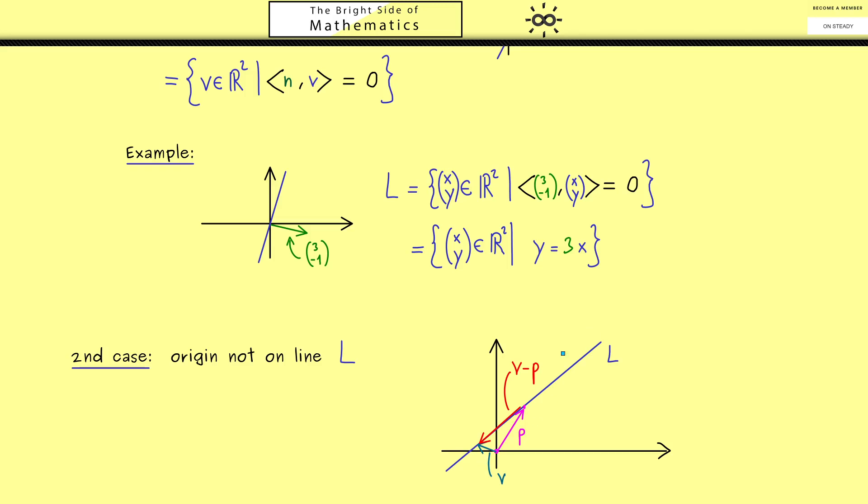And therefore we can do the same thing as before and use a normal vector. Then this vector v minus p is always orthogonal to the normal vector n. Then let's write this down: L is the set of all vectors v in R2 with the property that the inner product of n with v minus p is 0. So you should see the only thing we have to put in here is a normal vector n and the vector p. And then these two vectors describe the whole line.